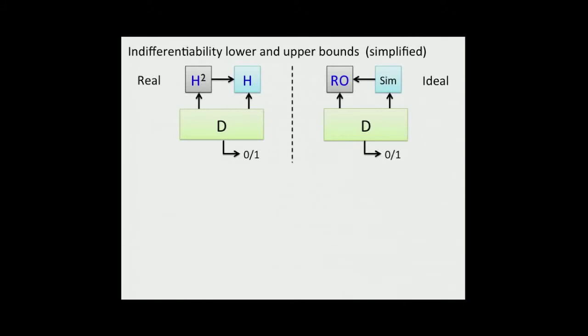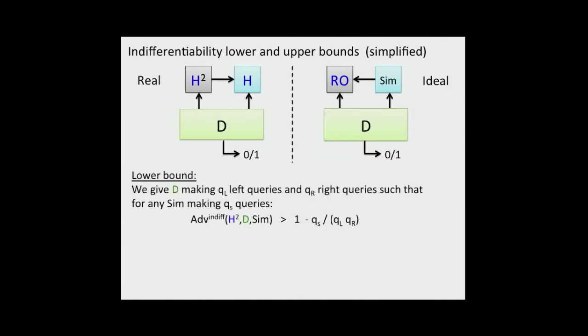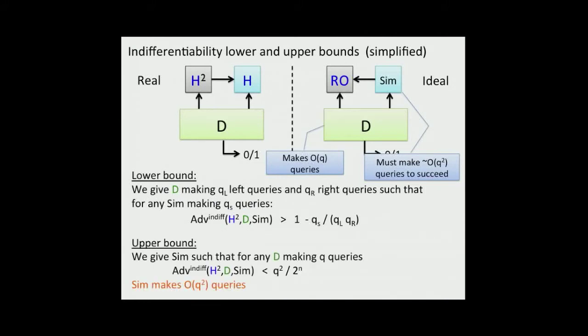We did quite a bit of work to figure that out. We're able to give a distinguisher D that can force the simulator to make a large number of queries. This distinguisher D is going to make Q_L queries to its left oracle, Q_R queries to its right oracle, and it's guaranteed to get an advantage of one minus the number of queries the simulator makes over Q_L times Q_R. What this means is the only way the simulator can be effective is to make a large number of queries. We get this sense that it can only be weakly indifferentiable. In the paper, we show a matching upper bound for H squared that if you give the simulator order Q squared queries, you can prove indifferentiability. This is a very technical result—I warn you before you print out the paper, it's like 60 pages of games.